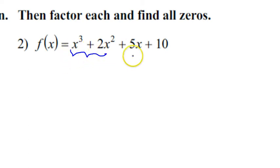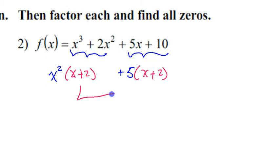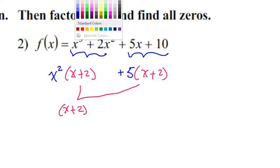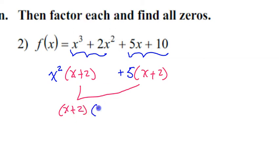So number two will be the same thing. So I'm going to do grouping on this pair and this pair. Again, the GCF is x squared. And that's going to leave behind x plus two. And then I'm really hoping I'm going to have another x plus two over here. But that would mean I need to pull out a five. Five times x is five x. Five times two is ten. So this makes sense. Now, the parentheses, the x plus two is a GCF itself. So I need to pull out a GCF of x plus two. That's going to leave behind x squared plus five.